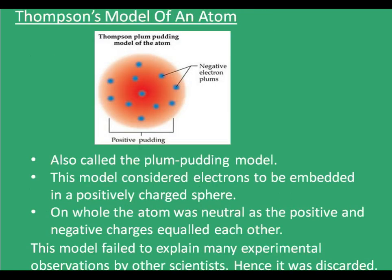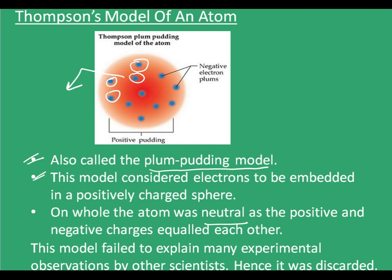Now let's see what was Thompson's model of an atom. Thompson's model was also known as the plum pudding model, because it resembled the plum pudding. It had a positively charged sphere containing negatively charged species in it. On the whole, the atom was neutral, meaning the positive charge equally balanced the negative charged species.